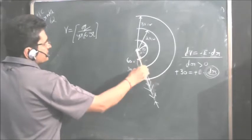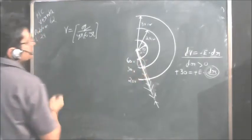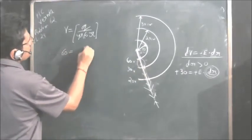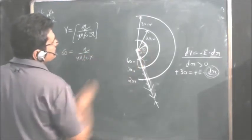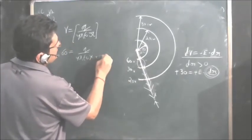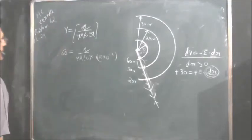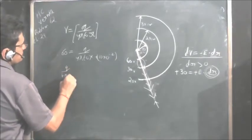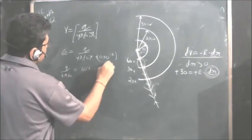So just take these two, what is the potential here and what is the potential here. Take this 60, 60 equals Q upon 4πε₀ into 10 into 10 to the power minus 2. This is the value of R. So Q upon 4πε₀ equals 60 into 10 into 10 to the power minus 2.